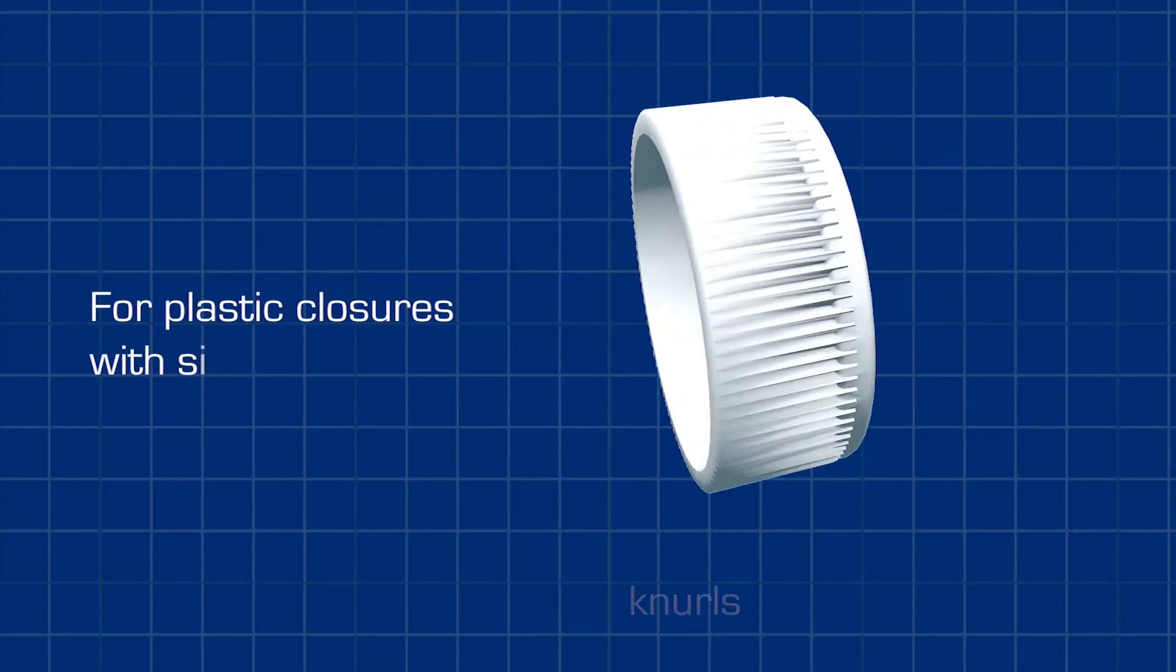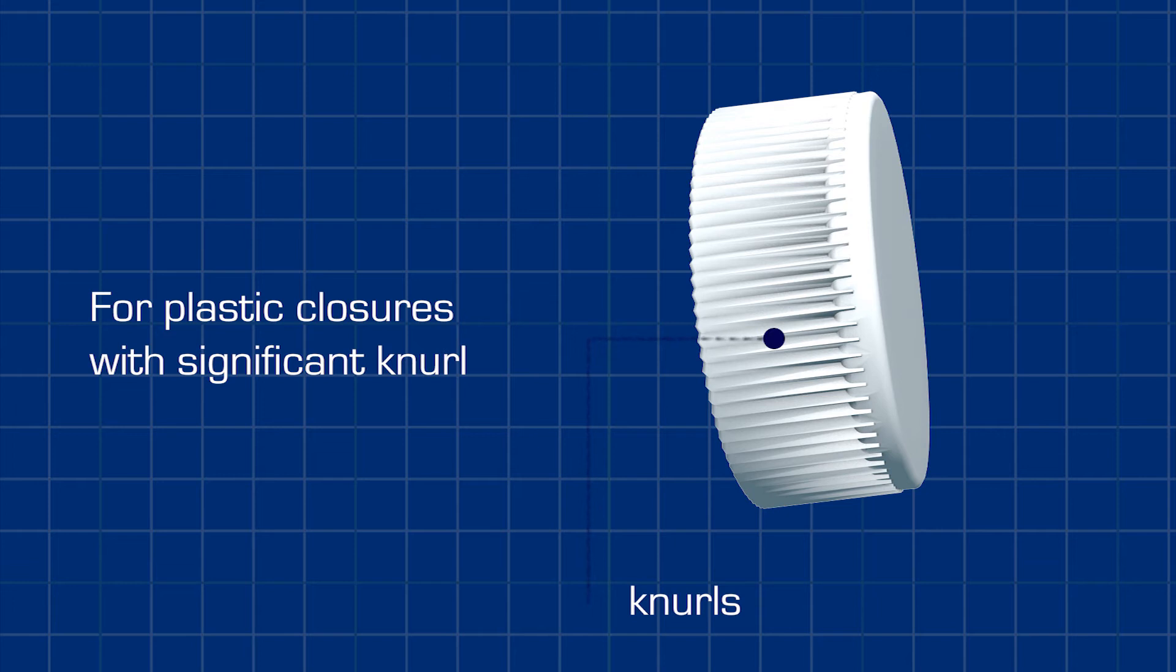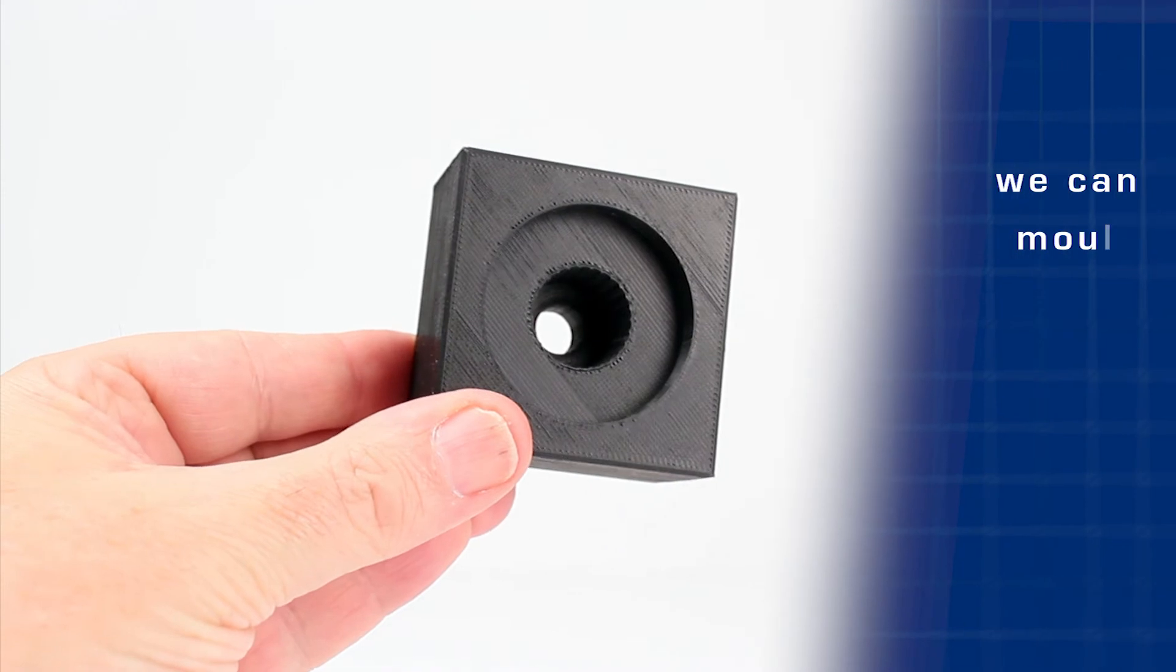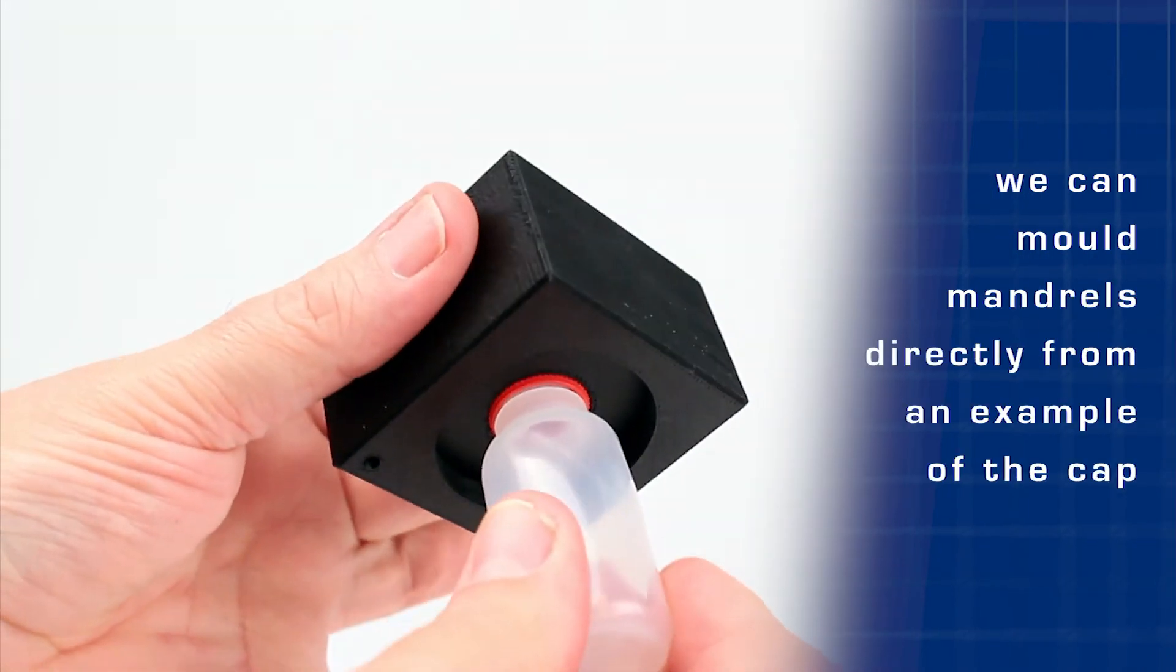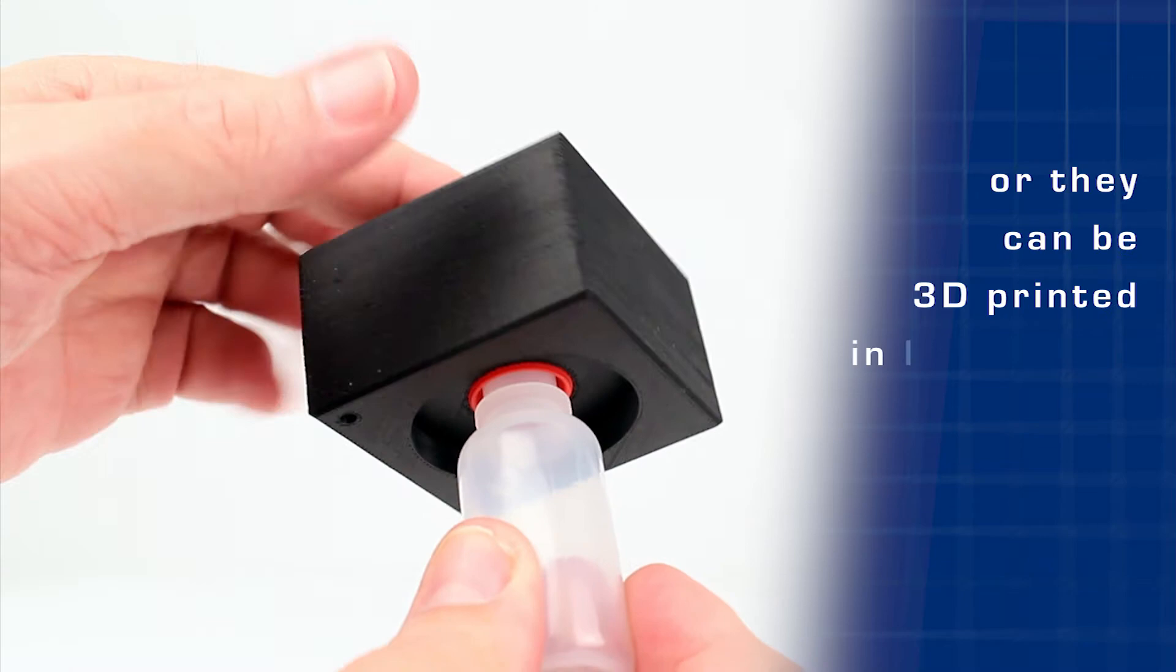For plastic closures with significant knurl, we can mold mandrels directly from an example of the cap, or they can be 3D printed in lightweight ABS.